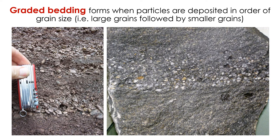There are also sedimentary structures that tell us about the movement of underwater currents. Graded bedding is a sedimentary structure where grains are sorted by size. On the bottom of a stratum, you find the largest grains. On the top of the stratum, you see the smallest grains. In other words, the particles — the grains, the clasts — were deposited in order of grain size. The large grains were deposited first, followed by the smaller grains.